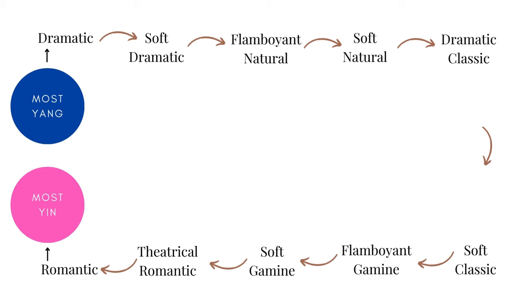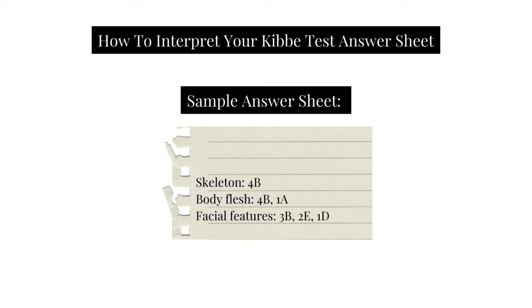Each answer going from A indicates the level of sharpness or roundness. A is the sharpest, followed by B which is sharp but with bluntness, followed by C which is blended, D which is soft, and E which is lush — very soft. Your answers will likely begin to group themselves, which will help you see where you fall, and depending on what the majority of your answers are, you'll be able to identify your Kibbe body type.